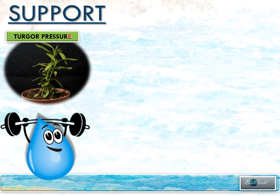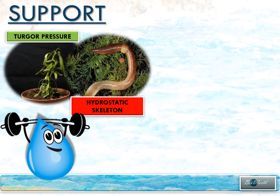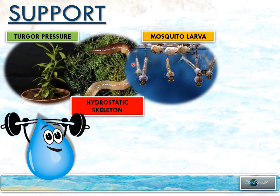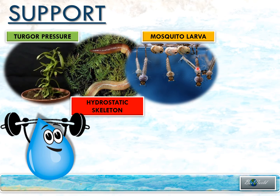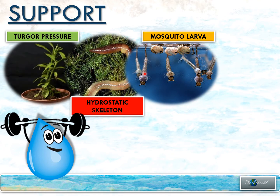Plants can remain upright with the help of turgor pressure. Turgor pressure forms when water pushes onto the cell wall of plant cells. Besides plants, some animals also require water for support. Animals that have no endoskeleton or exoskeleton use water as a hydrostatic skeleton to give them structure. Moving on to aquatic organisms — this picture shows mosquito larvae. The larva hangs at the interface of the water so that it can get oxygen from the atmosphere while still staying in the water.